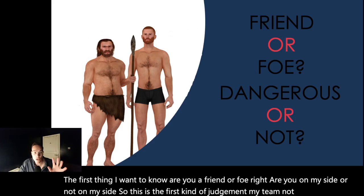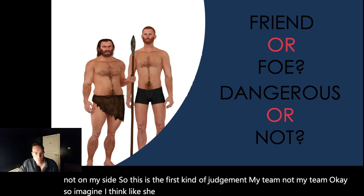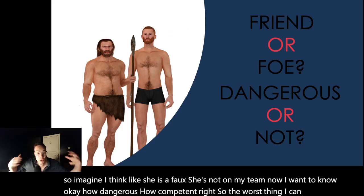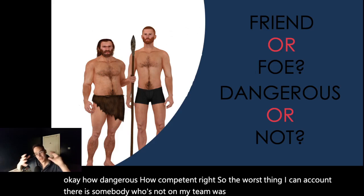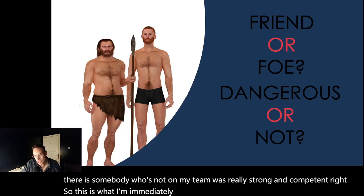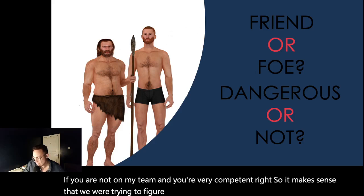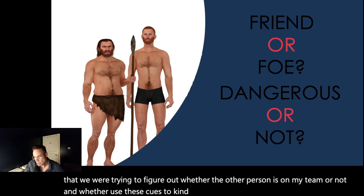So imagine I think like, she is a foe, she's not on my team. Now I want to know, how dangerous, how competent? So the worst thing I can encounter is somebody who's not on my team but is really strong and competent. So this is what I'm immediately trying to figure out. How much danger do you pose to me? And do you pose danger if you are not on my team and you're very competent? So it makes sense that we are trying to figure out whether the other person is on my team or not, and whether I use these cues to put you in these quadrants that we just saw. So that's an important evaluation people make.